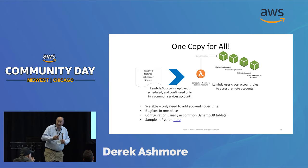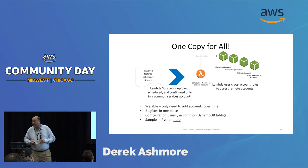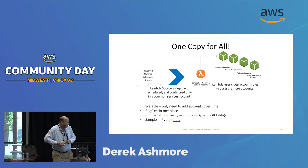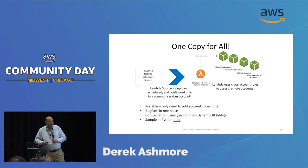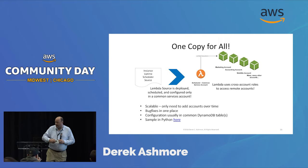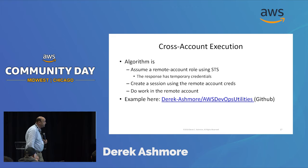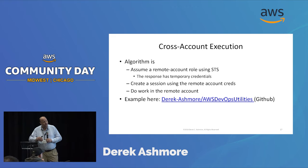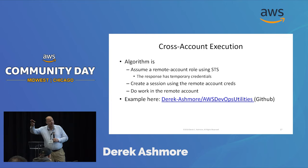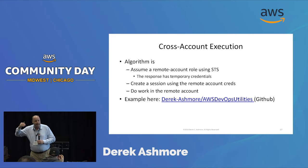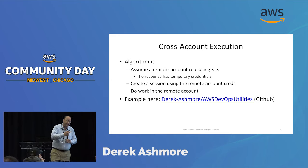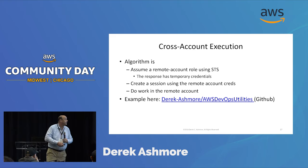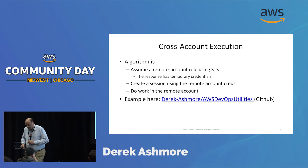With just a few lines of code you can install one copy of a lambda and through cross-account roles have it do work in all those other 70 accounts. You only have one deployment to manage, and if you need to change it, it gets changed in one place. As you add accounts, you just add them to that lambda's configuration. I usually use DynamoDB for configuration for those central-type lambdas. Cross-account execution involves the STS service — you assume a role using STS, get back temporary credentials that work in the remote account, and use those to do whatever work you need.